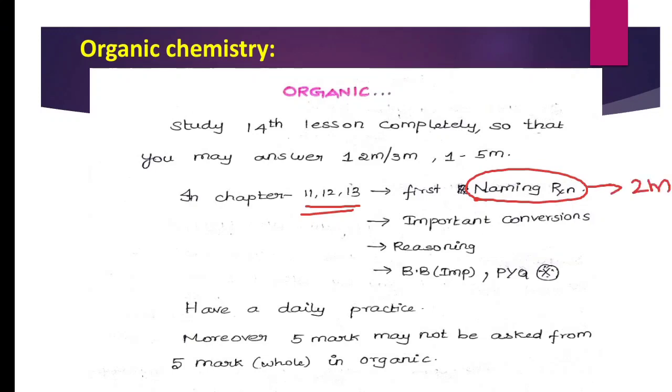2-mark, 3-mark, and 5-mark - naming reactions can be worth 3 to 5 marks. So naming reactions are very important. Next important is conversions and then reasoning-type questions. Do PYQ for these.